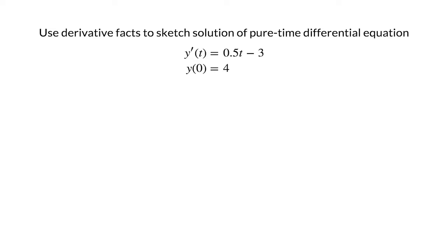Solving a pure-time differential equation requires doing exactly what we did on the previous slide. We are given a derivative. In this example, it is the derivative of a function y of the variable t, but the procedure doesn't depend on the letters we use to represent our functions. In this example, we are given that the derivative y'(t) is 0.5t minus 3.